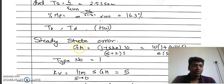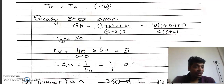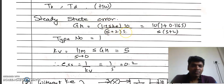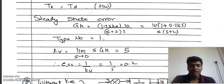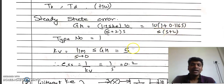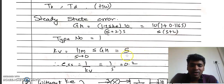For steady state error, we need the open loop transfer function G·H. Observing the denominator, the highest degree of s is 1, so it is a Type 1 system. For a Type 1 system with ramp input, we find Kv = lim(s→0) s·G·H. Substituting the G·H value, s cancels and you get 10(1+0)/(0+2) = 10/2 = 5. So Kv = 5.